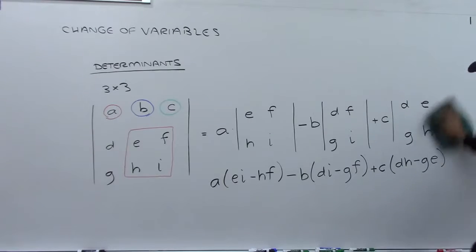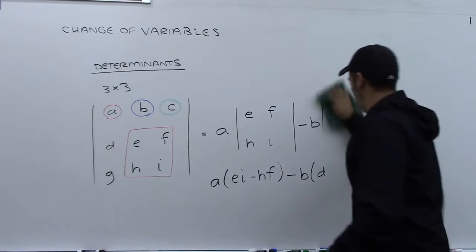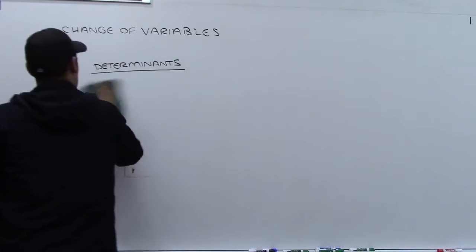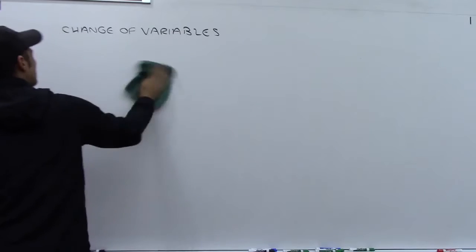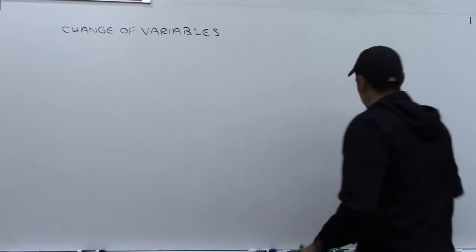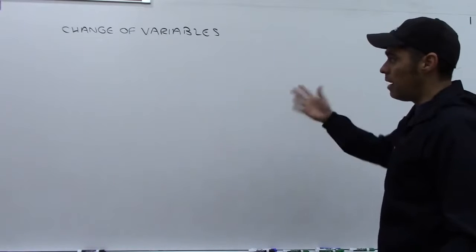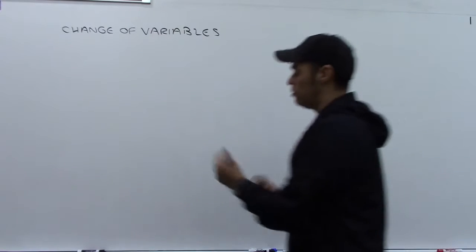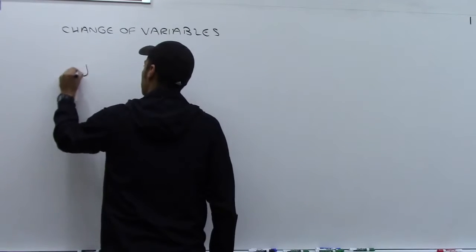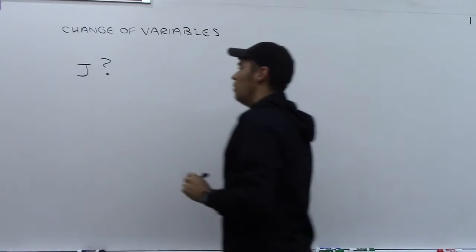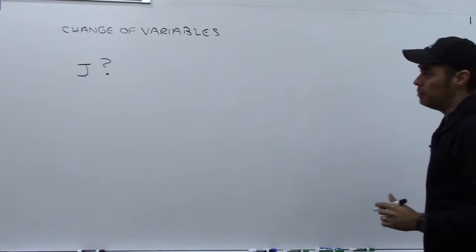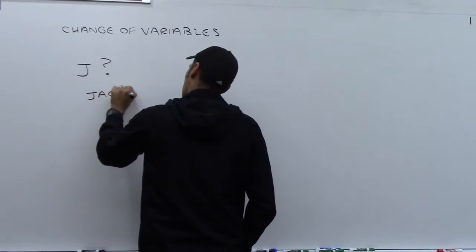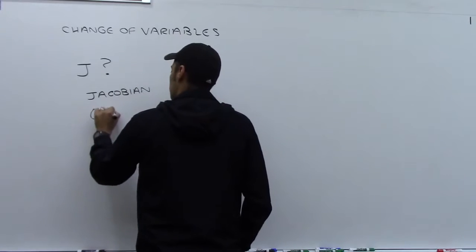Now let's go back. What's most important there is the method. That method extends out to 4×4, but I won't get into that. So what is the capital J? That's the question — what is capital J whenever we are trying to do our change of variables? Capital J stands for what's called the Jacobian, sometimes referred to as the Jacobian determinant.